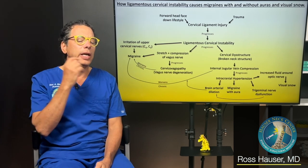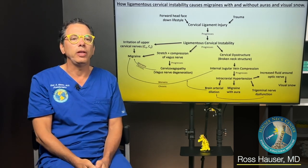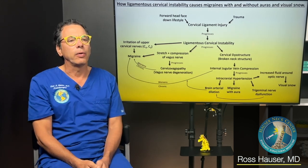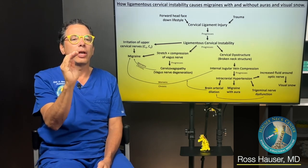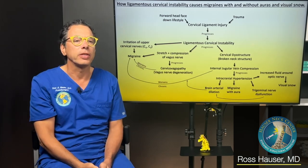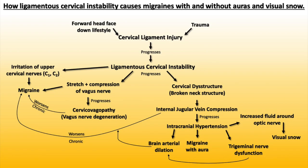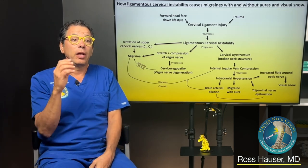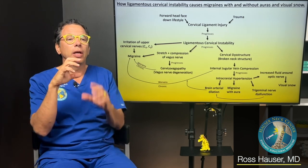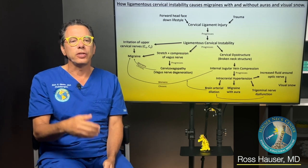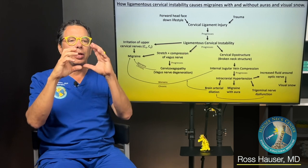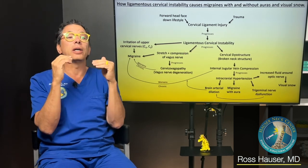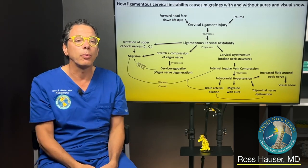When the neck curve changes, you can get irritation of the C1 and C2 nerves, which can also cause migraines. And when the neck curve changes you get jugular vein compression, which in and of itself can cause migraines to become chronic. When you get intracranial hypertension, the brain arteries dilate, and when the brain arteries dilate, that makes migraine headache more prevalent — because the pathophysiology of migraine is dilation of the arteries. Medications such as triptans or sumatriptan cause vasoconstriction of the arteries.